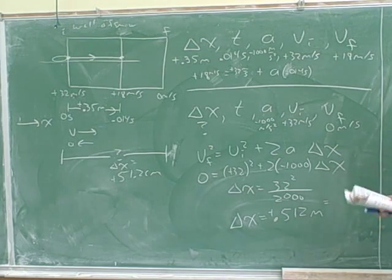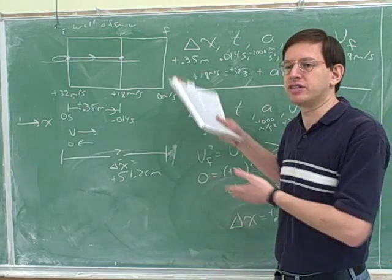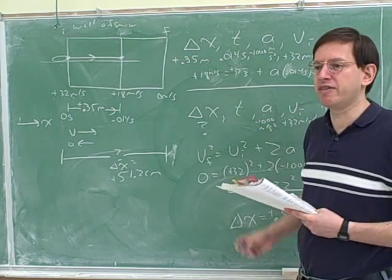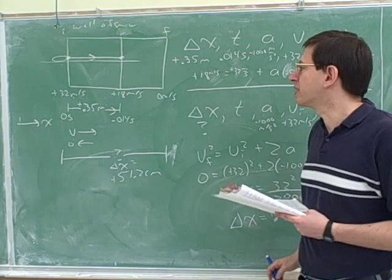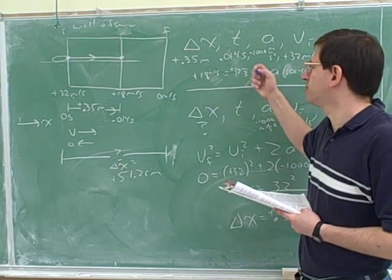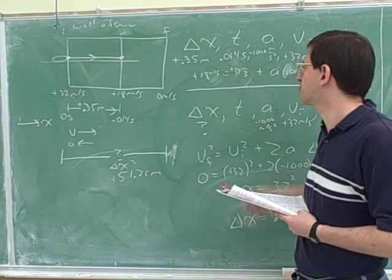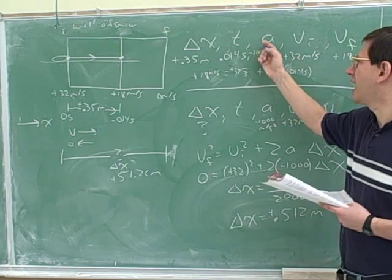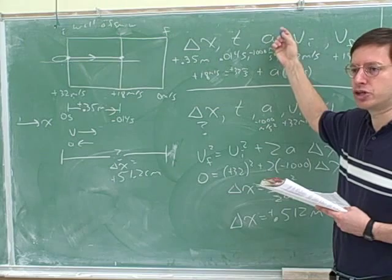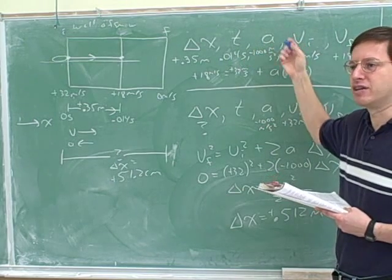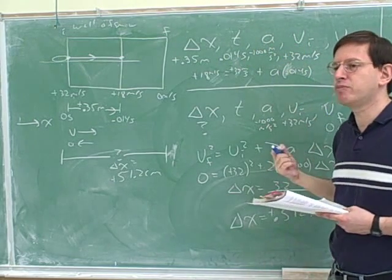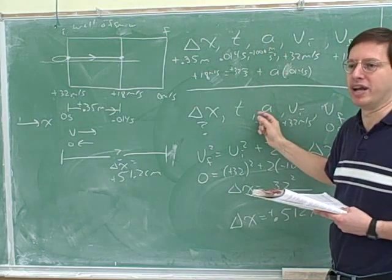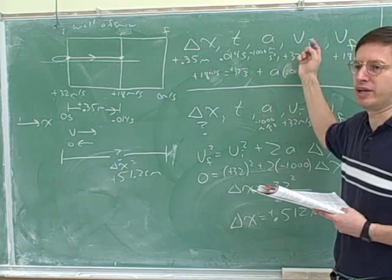We can learn some things from this problem. This is typical of what you'll see on exams: multipart problems. The first part didn't cause much difficulty, but not being systematic there may have hurt us on the second part. Now you can see what I meant about using the five variables as a framework. If the problem has multiple parts, you may need to write the framework more than once because the initial and final points change.